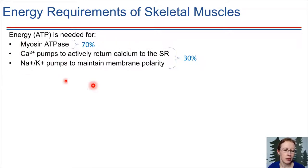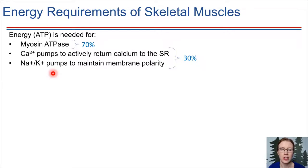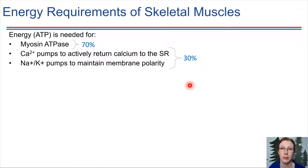We also have things going on with ions. Calcium has to flood out of the SR, and then after the contraction is done, it has to be pumped back in. So there's certainly some energy use there, just in terms of pumping the calcium back into the sarcoplasmic reticulum. And then we also have the normal sodium-potassium pumps, which are necessary for maintaining membrane polarity. So those are the major requirements in terms of ATP consumption in skeletal muscles.